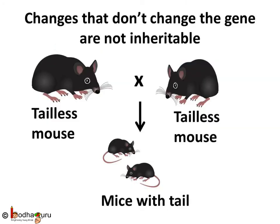To prove this, some experiments were done. Scientists bred some mice, and their tails were surgically removed. The process was followed continuously for many generations. Yet, all the new generations of the tailless mice were born with tails. This is because the removal of the tail and the inconveniences faced because of that didn't affect the genes.